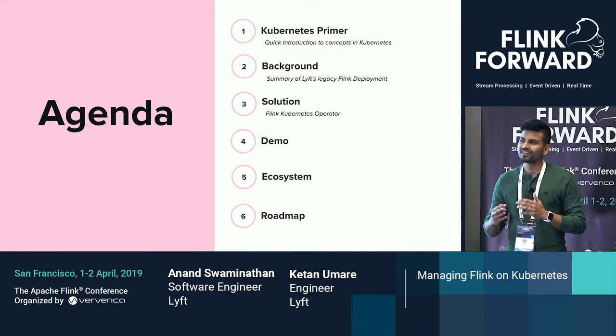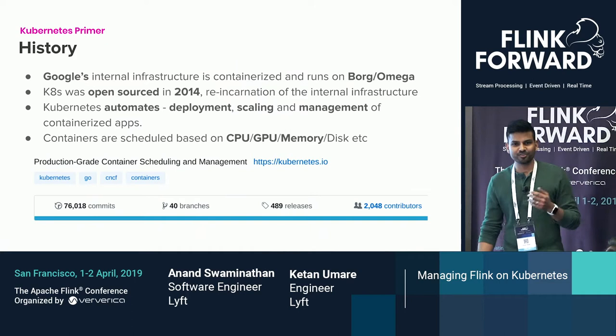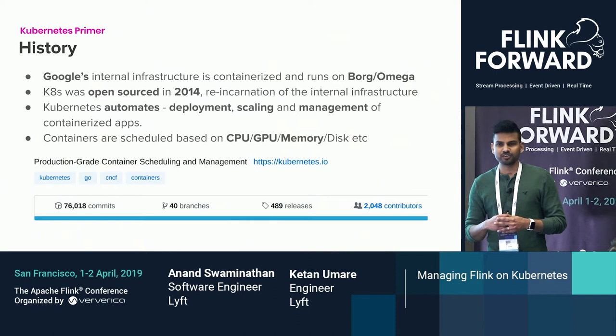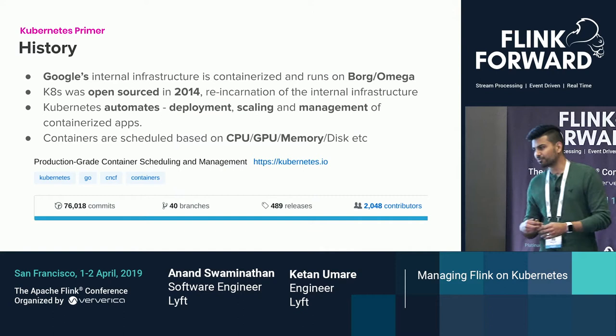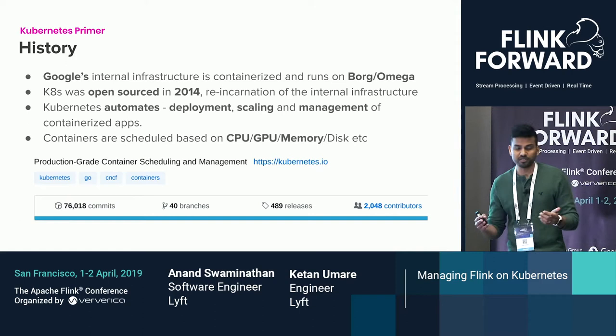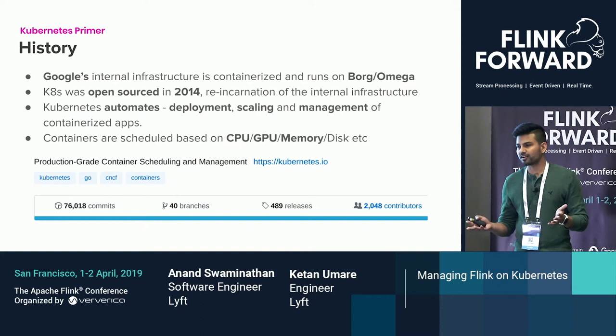So a quick history: Kubernetes, as everybody knows, was started at Google. It's essentially the open source version of its internal infrastructure called Borg and Omega. Google was one of the first companies running containers in production before Docker existed, and then they came out with Kubernetes, Docker happened, and the world changed. Kubernetes is essentially an orchestration engine that allows you to create deployments and manage applications at scale using containerized applications.